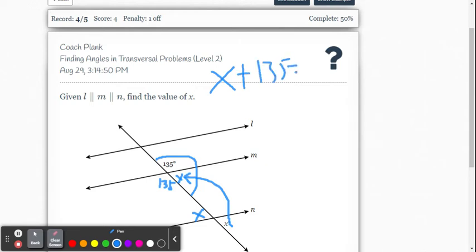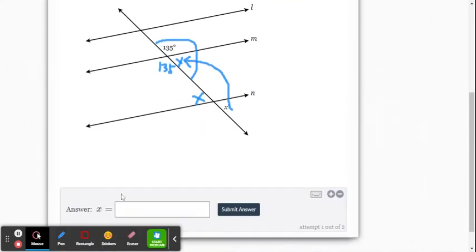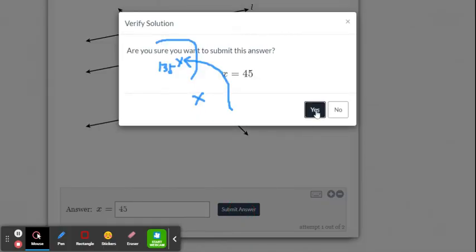So x plus 135 equals 180. We're going to subtract 135 from both sides here and we get 45 degrees. So we're going to go ahead and enter that into Delta Math. x equals 45 and submit.